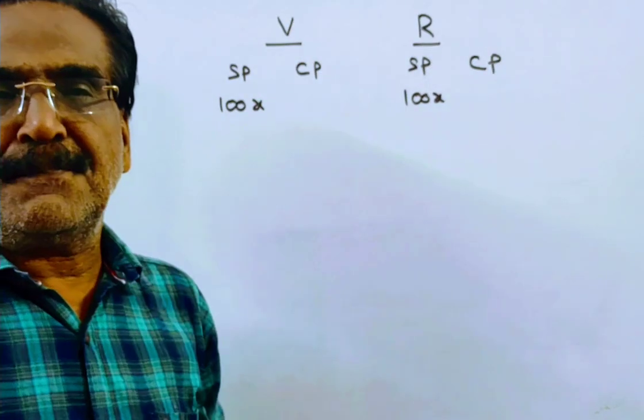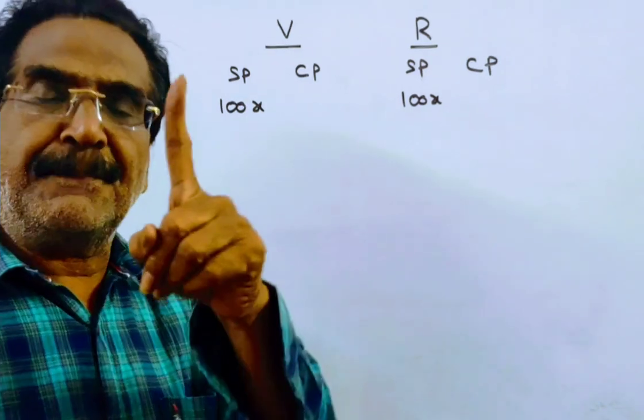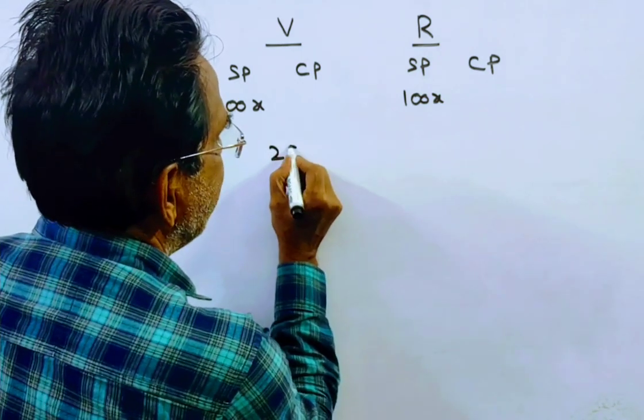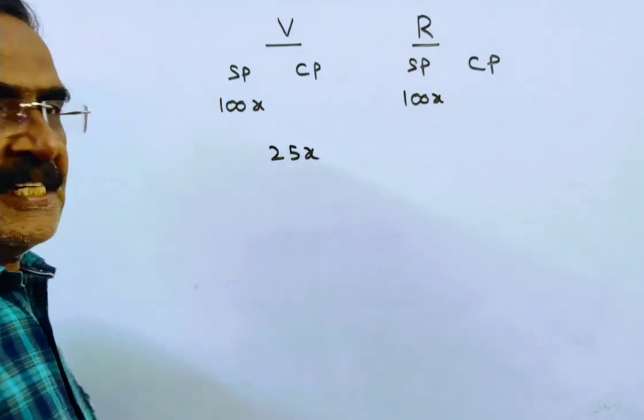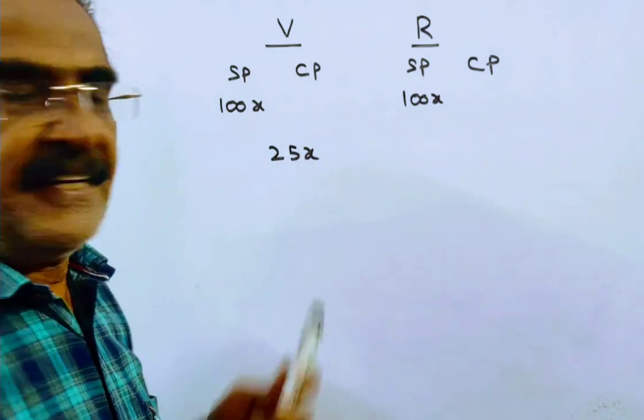Vinith calculates his profit on selling price. Vinith gets a profit of 25%, so 25% of 100x is equal to 25x. This is the profit of Vinith.